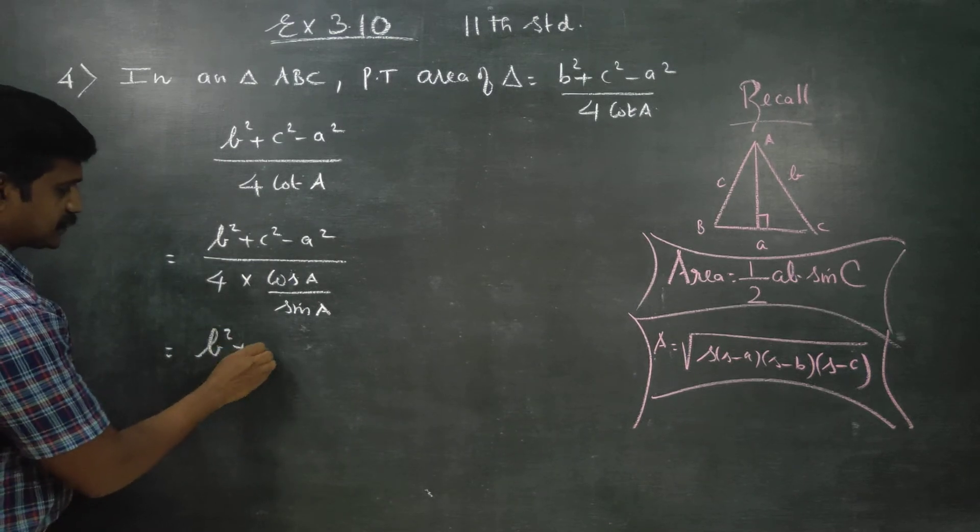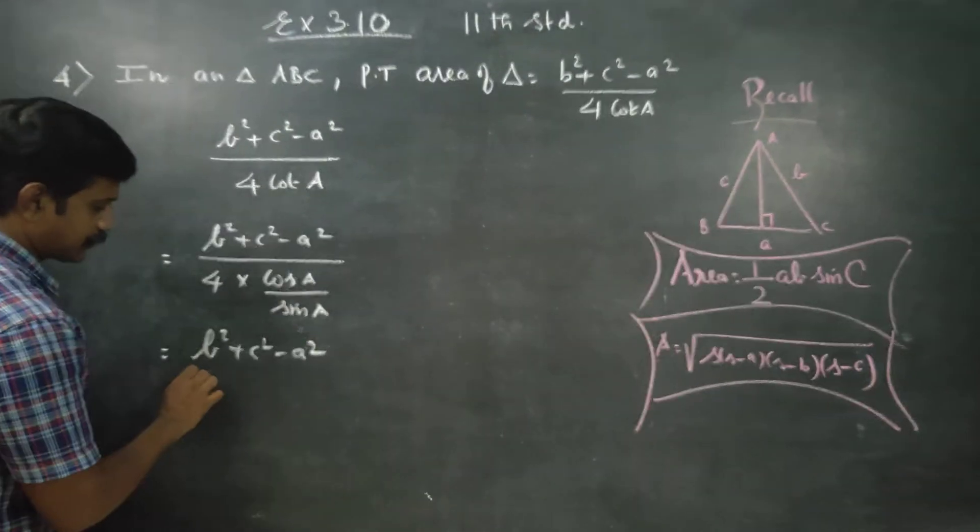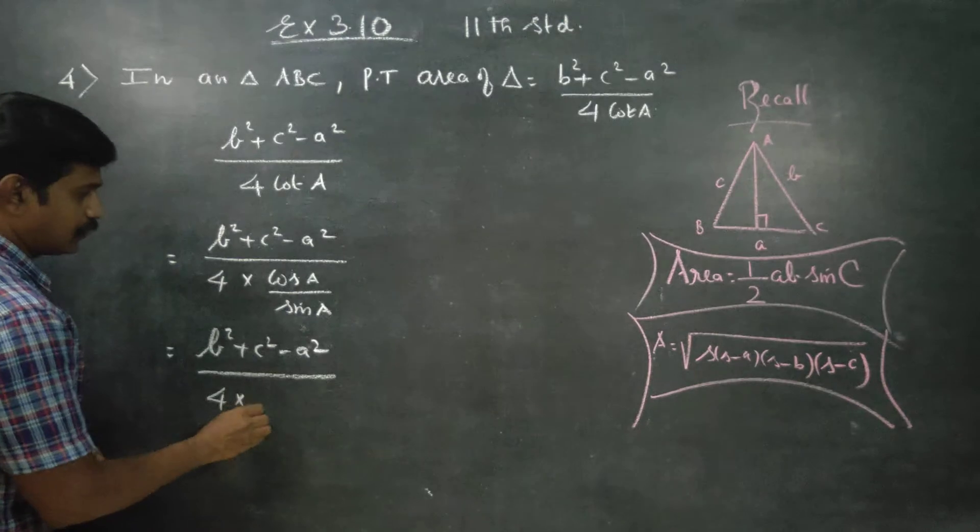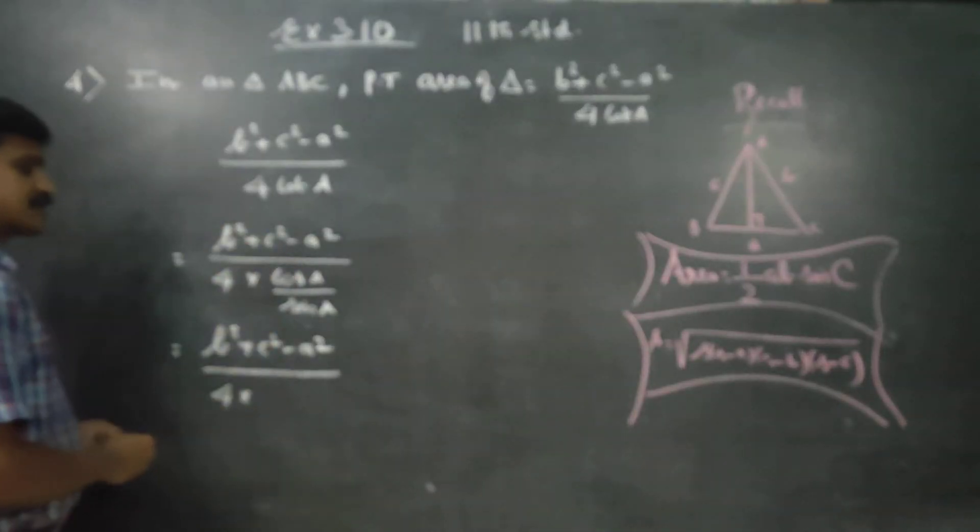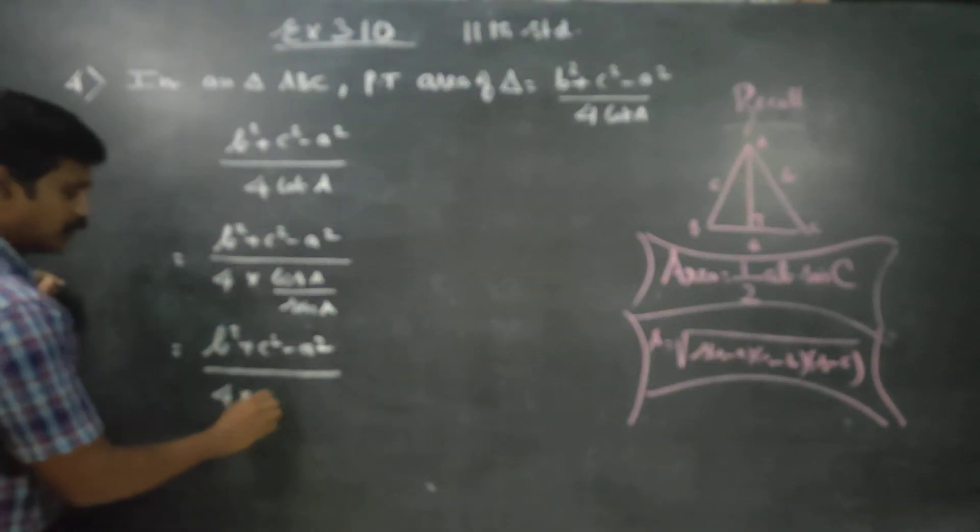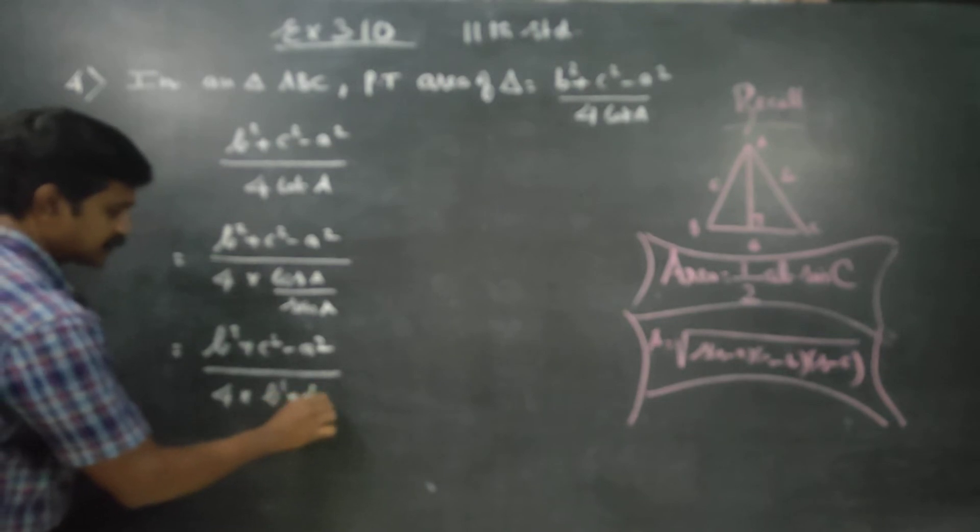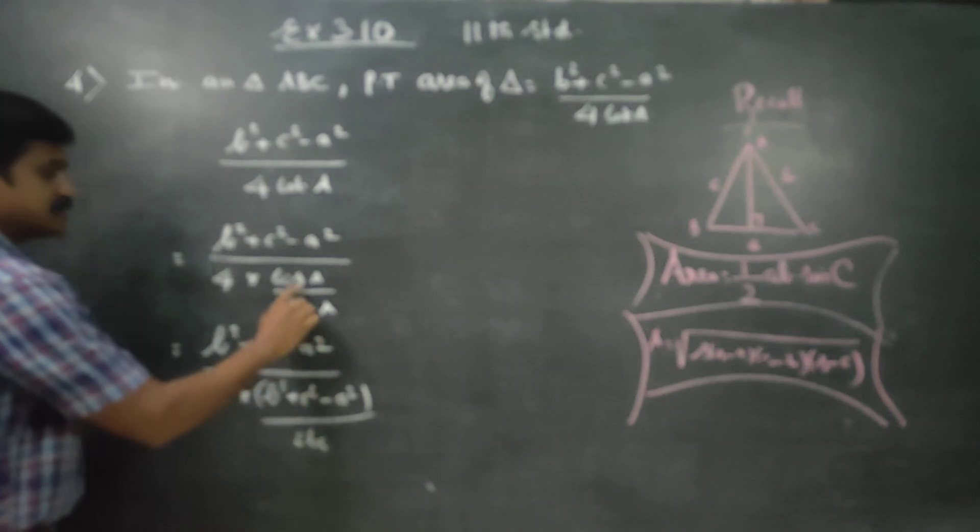b square plus c square minus a square, 4 into cos. What is cos a formula? b square plus c square minus a square by 2bc, correct? By 2bc,